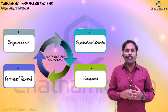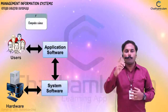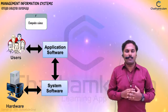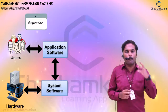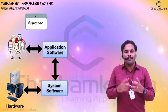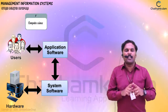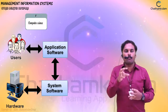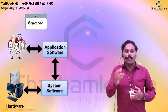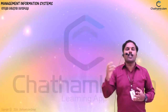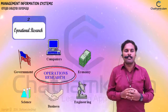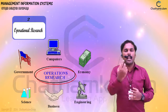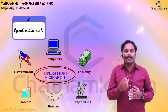First is computer science — what computer science means is the components that are used for a MIS network with respect to discipline available in the market. Then coming into operational research, the calculation part that is available in the MIS.